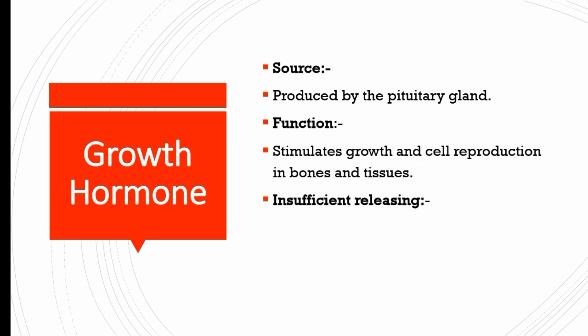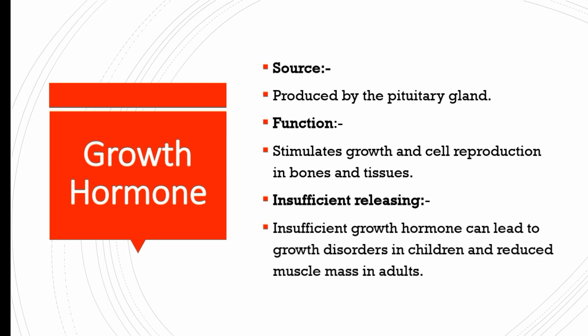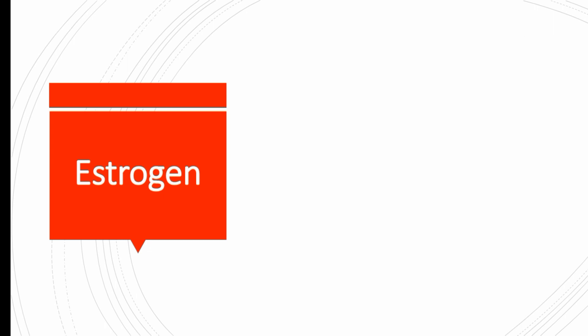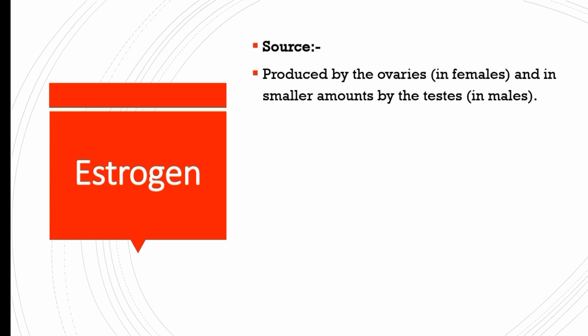Growth hormone is produced by the pituitary gland. Its function is to stimulate growth and cellular production in bones and tissues — that is why it is known as growth hormone. Insufficient growth hormone can lead to growth disorders in children and reduced muscle mass in adults.